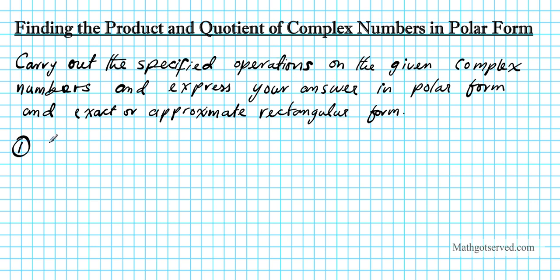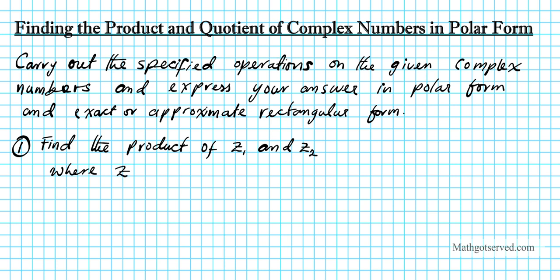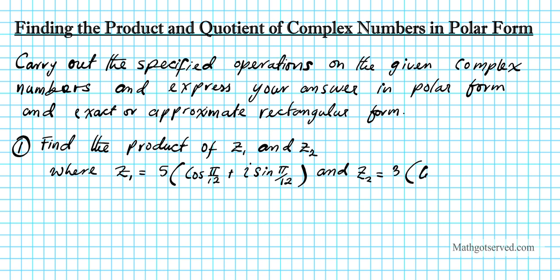So let's take a look at question number one. We're going to find the product of z1 and z2, where z1 equals 5 cosine pi over 12 plus i sine pi over 12, and z2 equals 3 cosine pi over 12 plus i sine pi over 12. These are two complex numbers written in polar form. We know that it's polar form because you have the radius and the two angles.